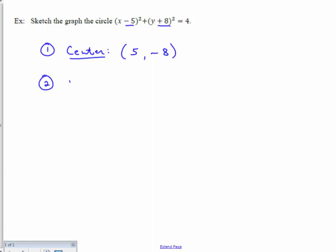Second thing is to identify the radius. To find the radius, you will always take the square root of the value that's on the right. Square root of 4 would be 2.